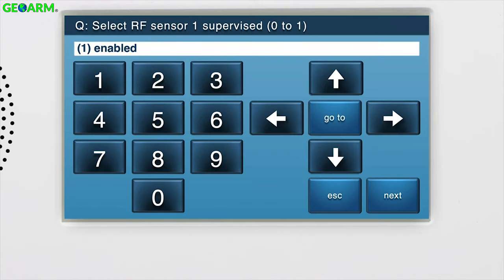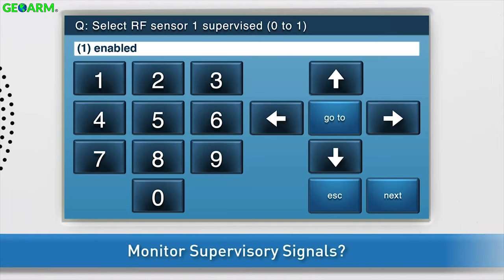Next, decide whether or not you want the panel to monitor supervisory signals of the carbon monoxide detector, such as low battery, tamper, and more. Select 1 Enabled to activate this feature. Press the down arrow to go to the next sub-question.